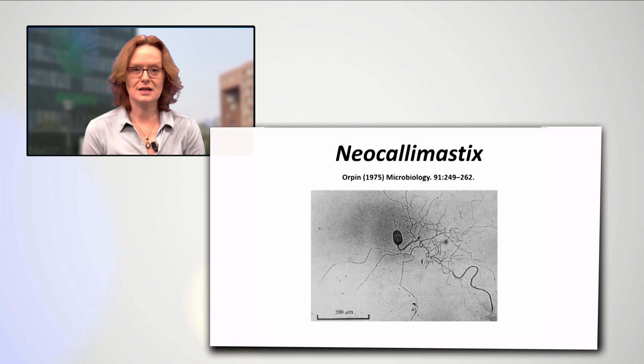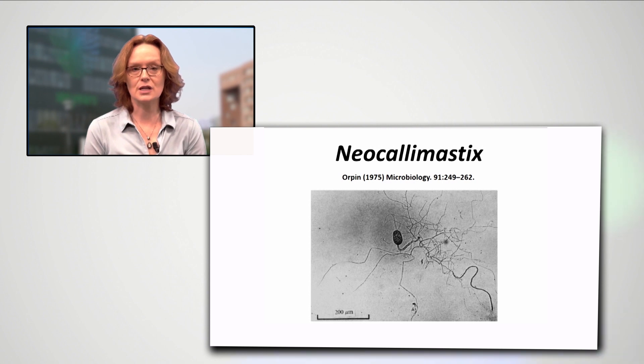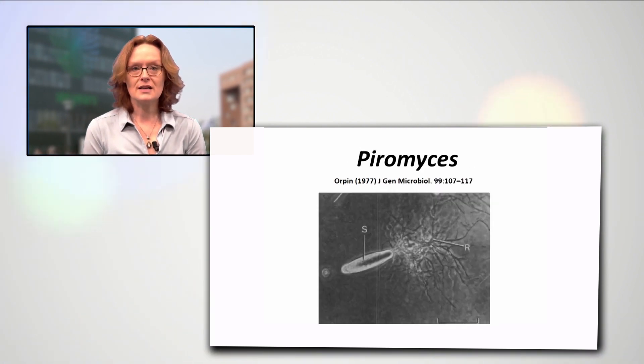Neocallimastix was the first anaerobic fungal genus to be discovered, in 1975 by Colin Orpin. Piromyces was also characterised by Orpin. The zoospores of Piromyces are monoflagellated, unlike those of Neocallimastix which are polyflagellated.